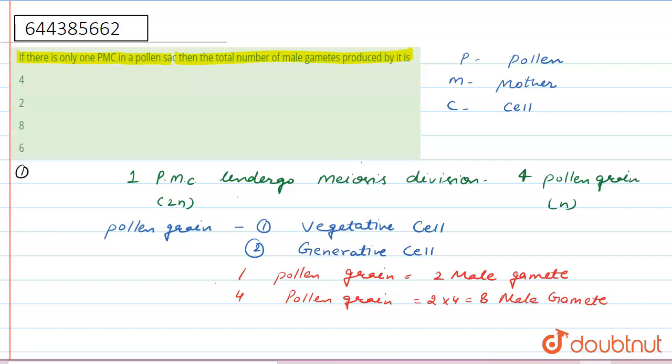So because of eight male gametes, the first option of four is wrong, second option of two is also wrong, third option of eight is right, fourth option of six is also wrong. So our right answer is option third, that is eight. Why? Because one pollen grain consists of two male gametes, so four pollen grains form eight male gametes.